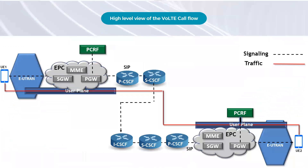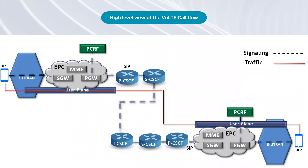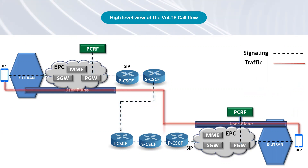When a user makes a VOLTE call, the call is first set up between the mobile device and the EPC. The MME then sets up a dedicated bearer for the voice traffic, and the S-Gateway routes the traffic to the appropriate destination. Finally, the traffic is sent to the IP Multimedia Subsystem, or IMS, which handles the actual voice transmission.